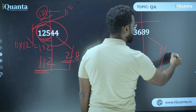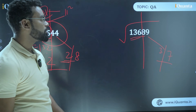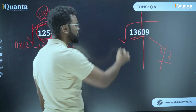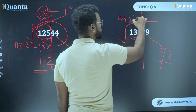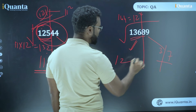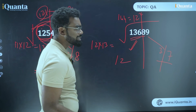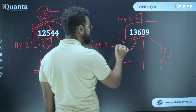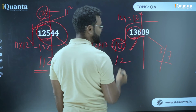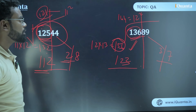Similarly, for the next example with unit digit 9, the two possibilities are 3 and 7. For the remaining digits 136, the closest perfect square less than 136 is 121, which is 12 squared. So the initial two digits are 12. Then 12 × 13 = 156. Since 136 is less than 156, take the smaller unit digit. So the answer is 123.